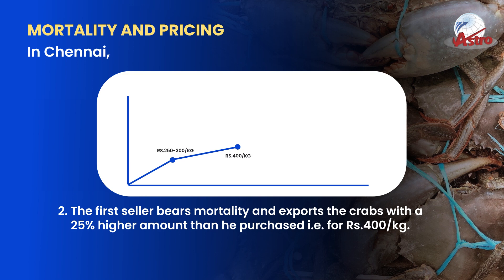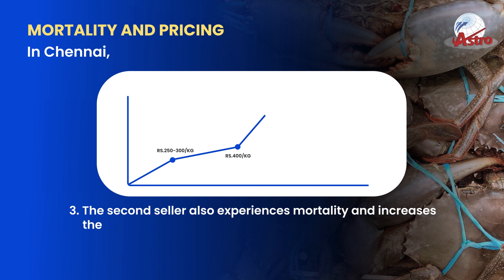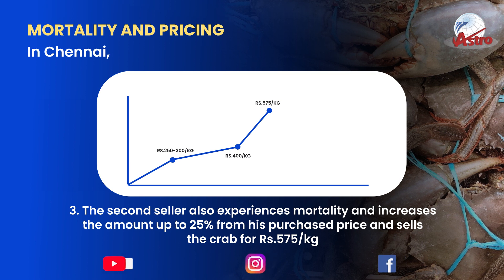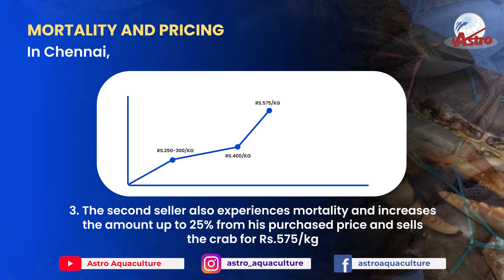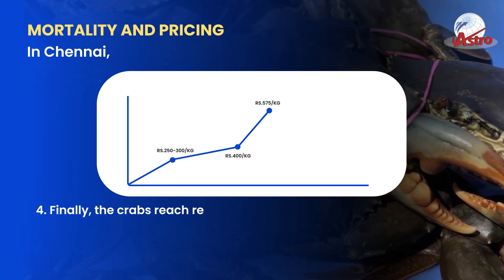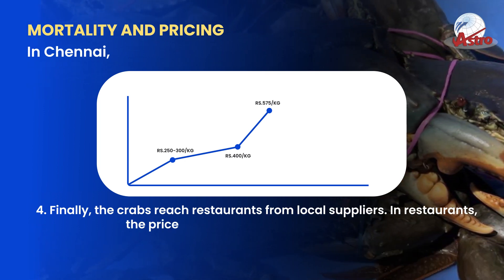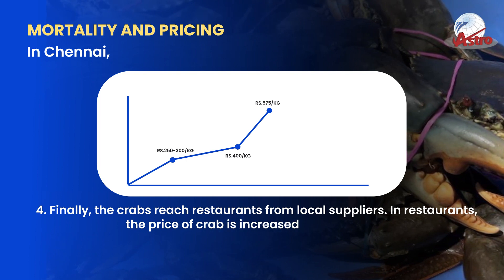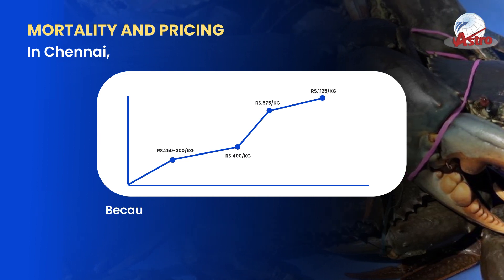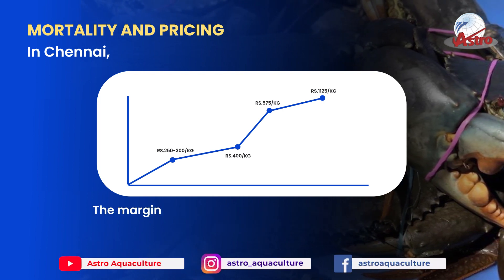For example, the first seller sells at 400 rupees per kilogram. The second seller also experiences mortality and increases the amount by up to 25% from his purchased price, selling the crabs for 575 rupees per kilogram. Finally, the crabs reach restaurants from local suppliers. In restaurants, the price of crab is increased by up to 45% and the crabs are sold for 1,125 rupees per kilogram, because they have to pay for cooking and the cost of leftover crabs.